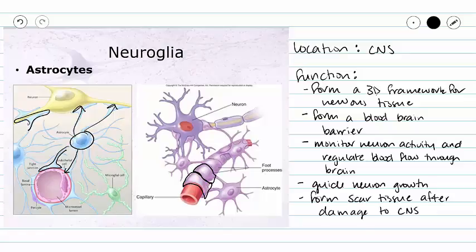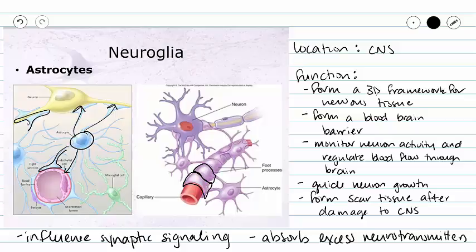We've got a couple more functions for our astrocytes. Astrocytes will also communicate with neurons and influence synaptic signaling between neurons. And lastly, our astrocytes are going to regulate the composition of CSF by absorbing excess neurotransmitters. So as you can see, our astrocytes have very broad function in our central nervous system.